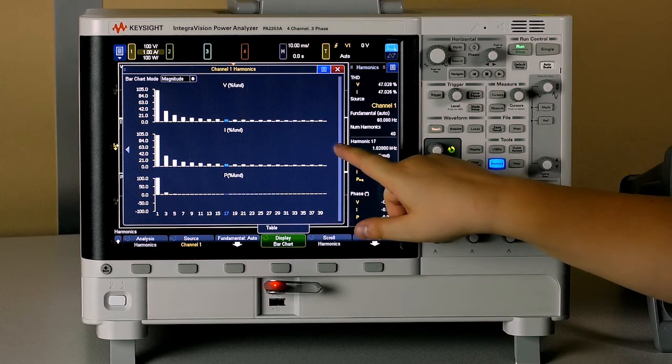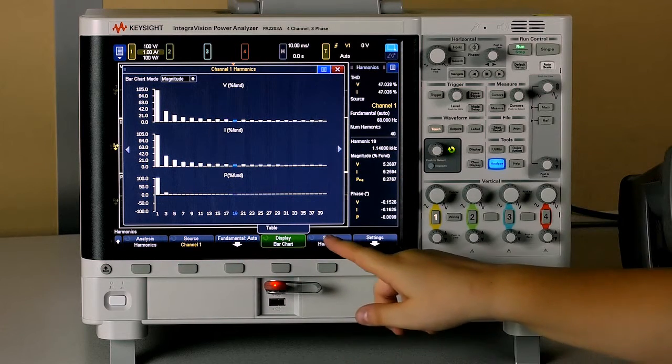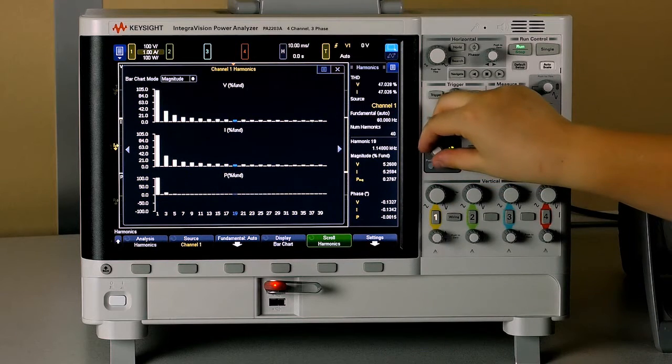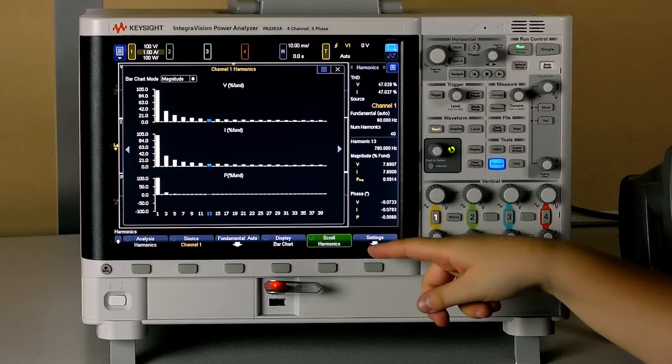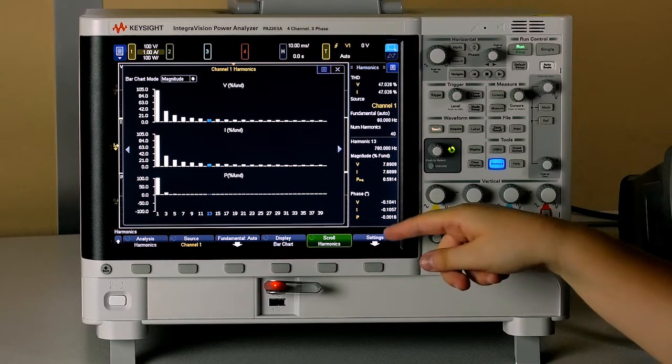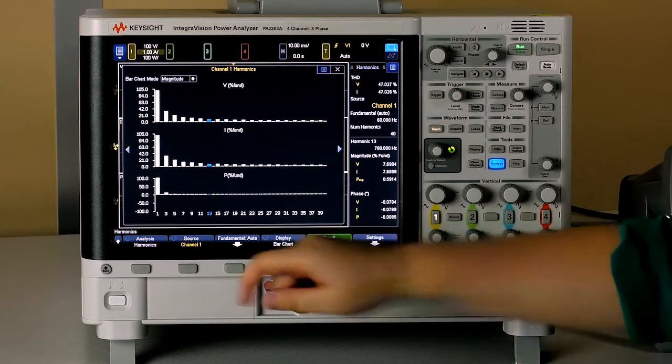You can also scroll through with these arrows, or even if you hit scroll harmonics, you can scroll with that same dial you used for the list. The sidebar will display information from the table about the harmonic that's selected in blue over here.